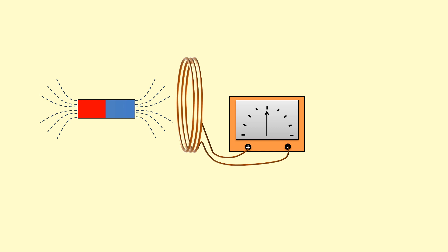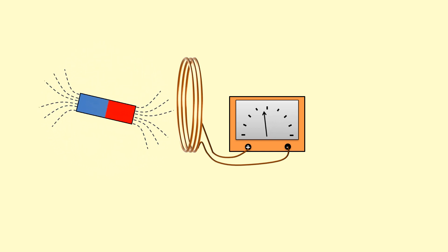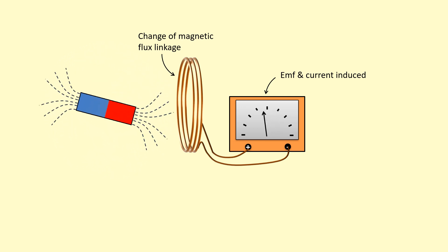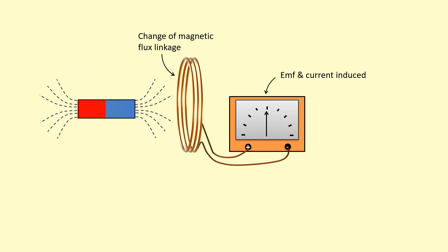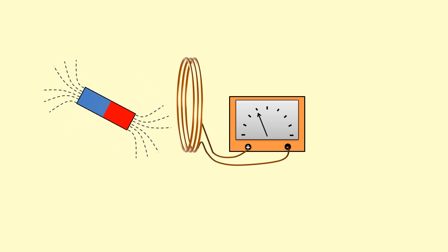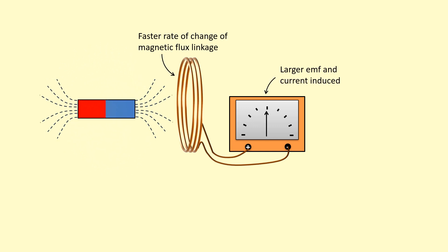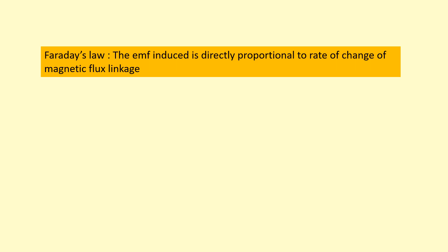We can change the flux through the coil in many ways. For example, if we spin the magnet, there's an increase and then a decrease in the flux, and then an increase in the opposite direction because the north and south poles take turns. So whenever there's a change in magnetic flux linkage, there's an EMF induced. If I spin it faster, a larger EMF is induced — a really fast rate of change of flux linkage gives a large EMF. But if I hold it stationary, even though there is flux going through the coil, there's no EMF induced because there's no change.